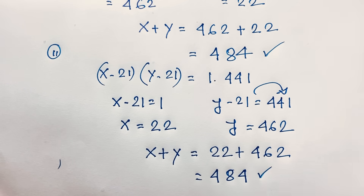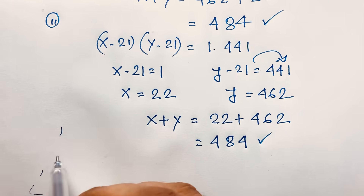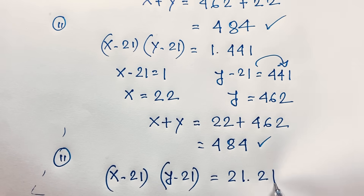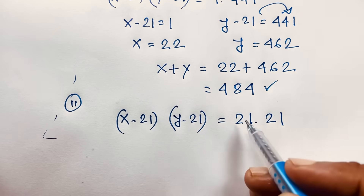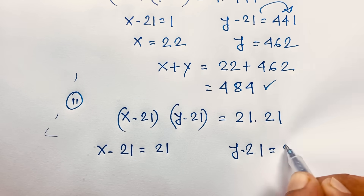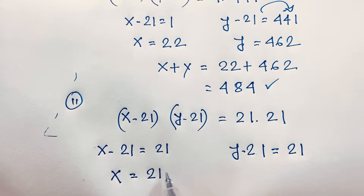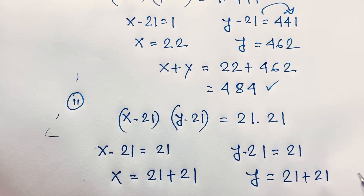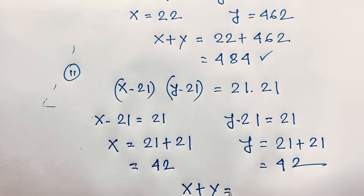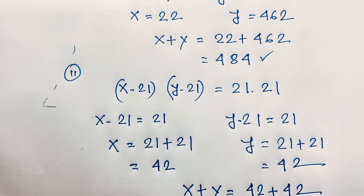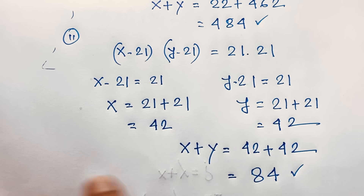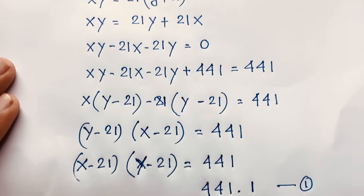Both Case 1 and Case 2 give the same solution. For Case 3: x minus 21 equals 21 and y minus 21 equals 21, so x equals 42 and y equals 42. Therefore x plus y equals 42 plus 42 which is 84. This is our other solution in this algebraic problem. Thank you all — if you enjoyed this, please subscribe to our channel for more interesting videos. Goodbye, take care.